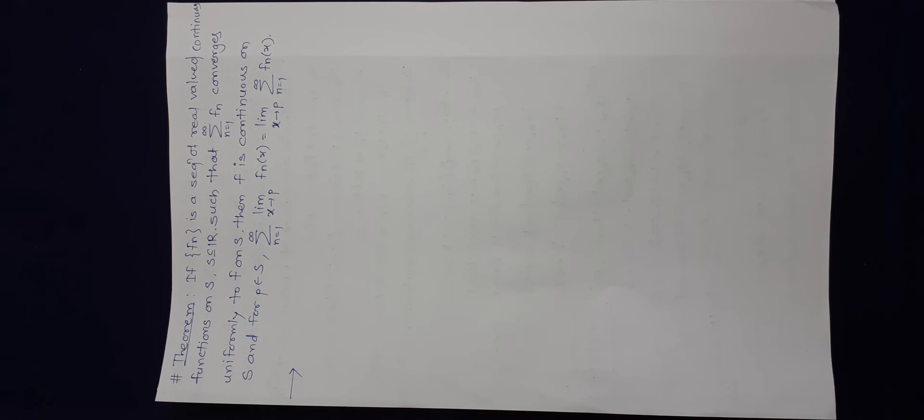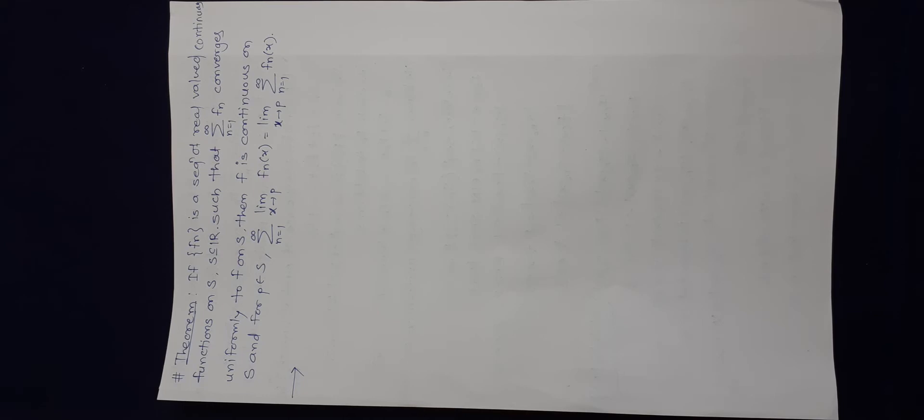Hi everyone. Let us discuss this theorem of series of functions. We have fn as a sequence of real-valued continuous functions — each fn is continuous. The second condition is that summation fn converges uniformly to f. We have to prove f is continuous and the equality mentioned in the theorem.